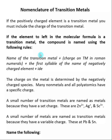If you have a transition metal all the way to the left in your molecular formula, you want to follow these rules to name it. These rules are almost exactly the same as the ones for regular metals — the only difference is we need to include the charge on the transition metal. So it is the name of the transition metal plus the charge on the transition metal in Roman numerals, then the first syllable of the name of the negatively charged element, and then the ending "-ide".